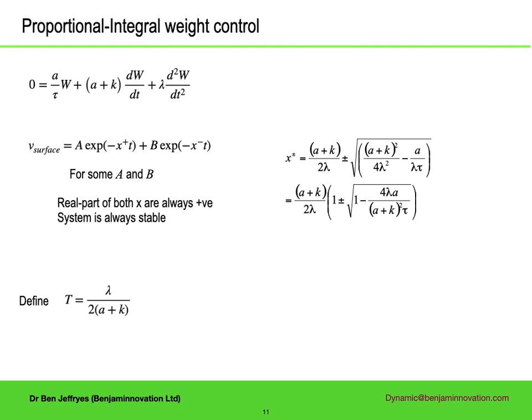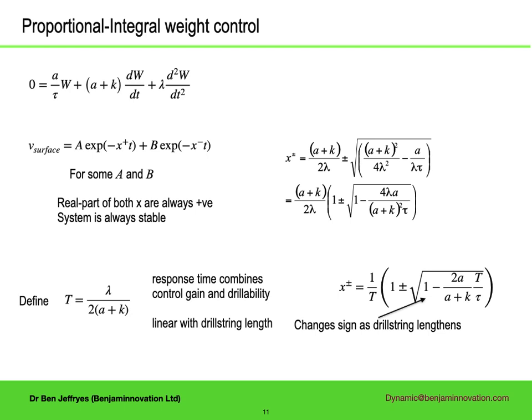How does the behaviour change as the parameters change? We have two parameters that are part of the below-ground drilling system — the compliance and the drillability — and two control parameters, the gain a and the integral time tor. If the decay time constants x are complex, their real part is the convergence time of the system, independent of the integral time. It's the compliance divided by twice the sum of the proportional gain and the drillability, and this response time will grow linearly with drill string length. The sign of the square root changes depending on the ratio of the response time to the integral time tor. So if the response time is much longer than the integral time, the x's have an imaginary component and the weight will oscillate as it converges. If the response time is much less than the integral time, both x's will be real and there will be no oscillation, just exponential convergence. The system will go from exponential to oscillatory convergence as the drill string gets longer.